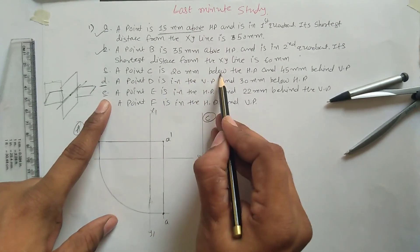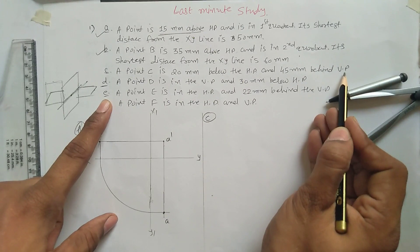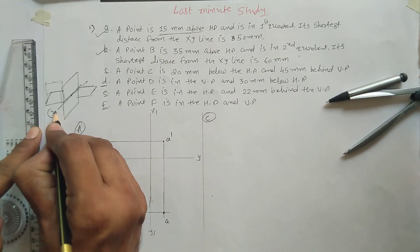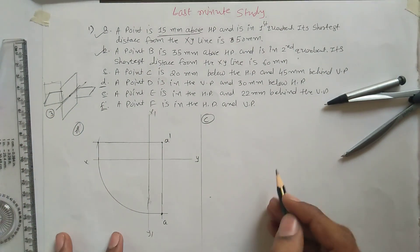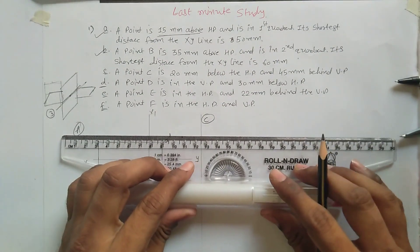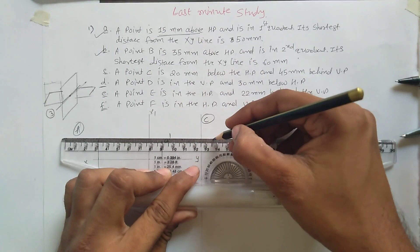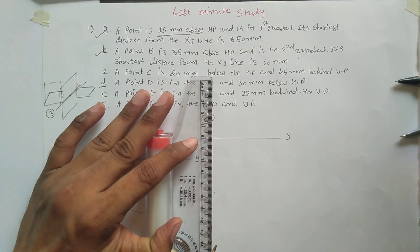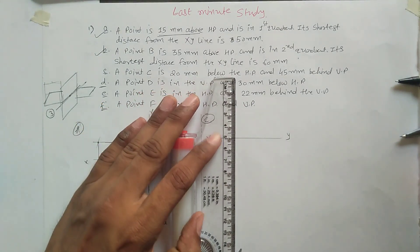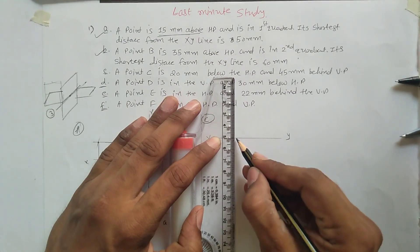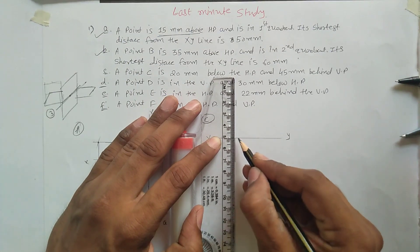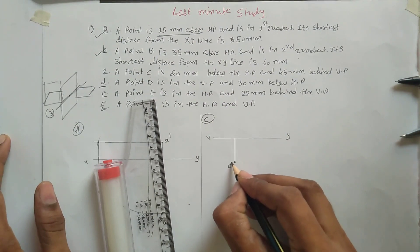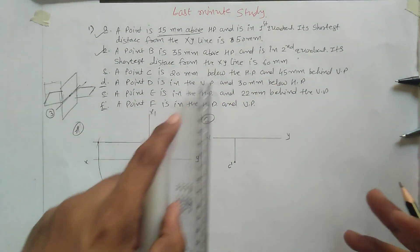Point C is 20mm below HP and 45mm behind VP. Below and behind means it is in the third quadrant. If the point is in the third quadrant, the front view will be below the XY line. So draw the XY line, measure 20mm below — this point is C-dash — and 45mm behind VP gives you point C.